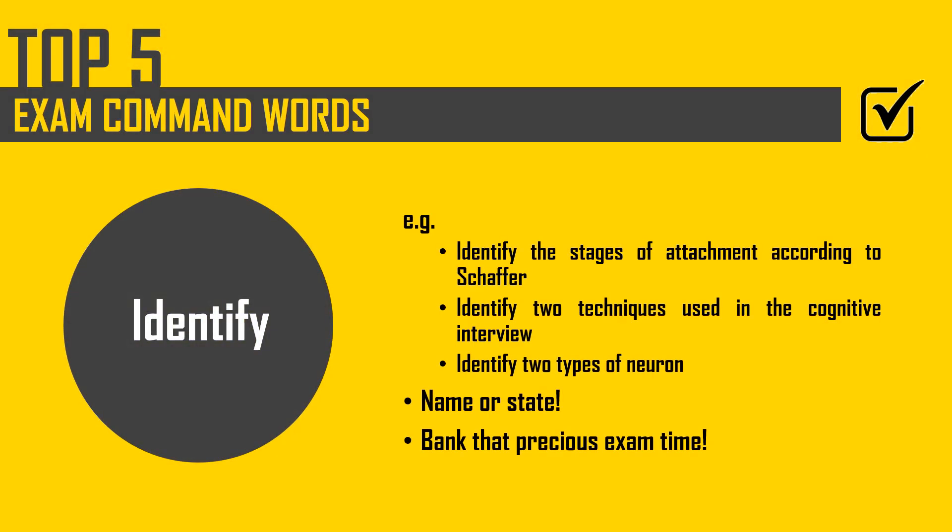Number 4 is 'identify'. It's one of the easiest command words to deal with and it's on this list because it's easy to miss and easy to waste your exam time — by that I mean explaining things when you don't need to. If it says 'identify', that is just name it or state it. Bank that time. It only takes you 10 seconds to write down the answer. So look out for that word.